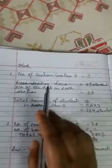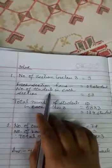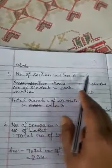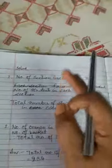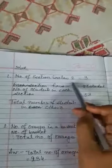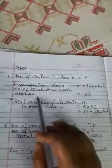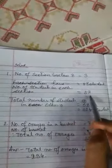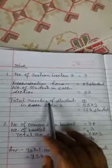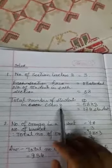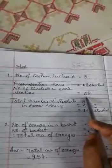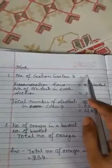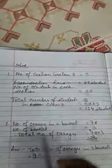Problem sum in your book, multiplication problem, first sum. Number of sections in Class 3 is 3. Number of students in each section is 58. Then what is the total number of students in Class 3? If each section has 58 students and there are 3 sections, so 58 × 3.